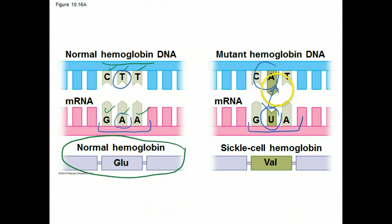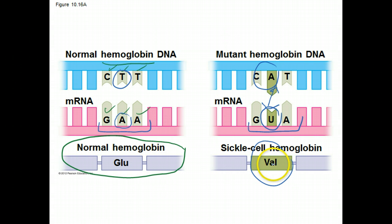This single substitution leading to an altered messenger RNA copy ultimately causes a change in the amino acid sequence that totally alters the capabilities of hemoglobin — instead you get a disease called sickle cell anemia. It's really important to have the correct DNA for a gene so you can make the correct messenger RNA, so you can make the appropriate chain of amino acids to get a functioning protein when those polypeptides come together.